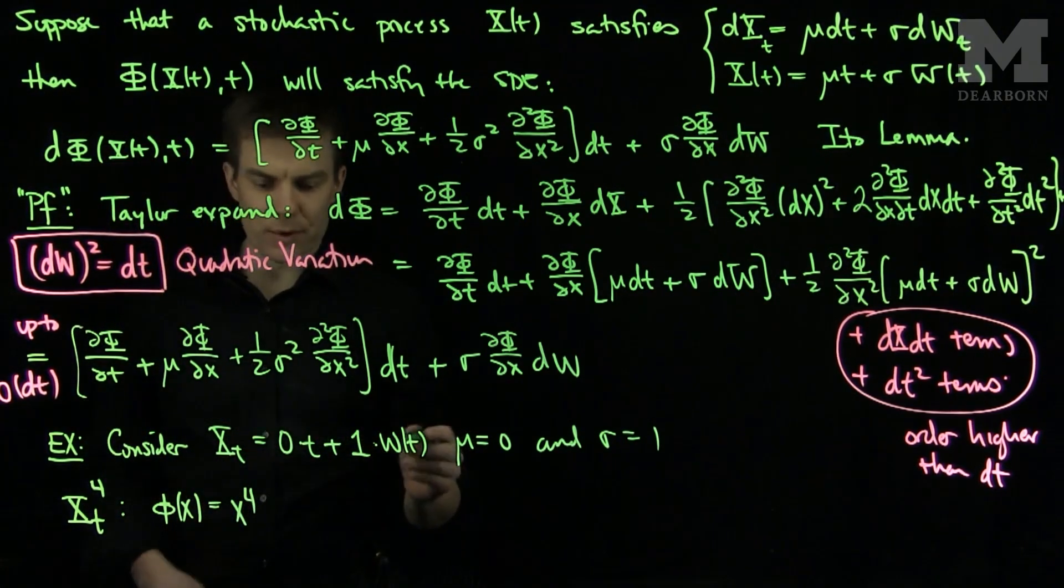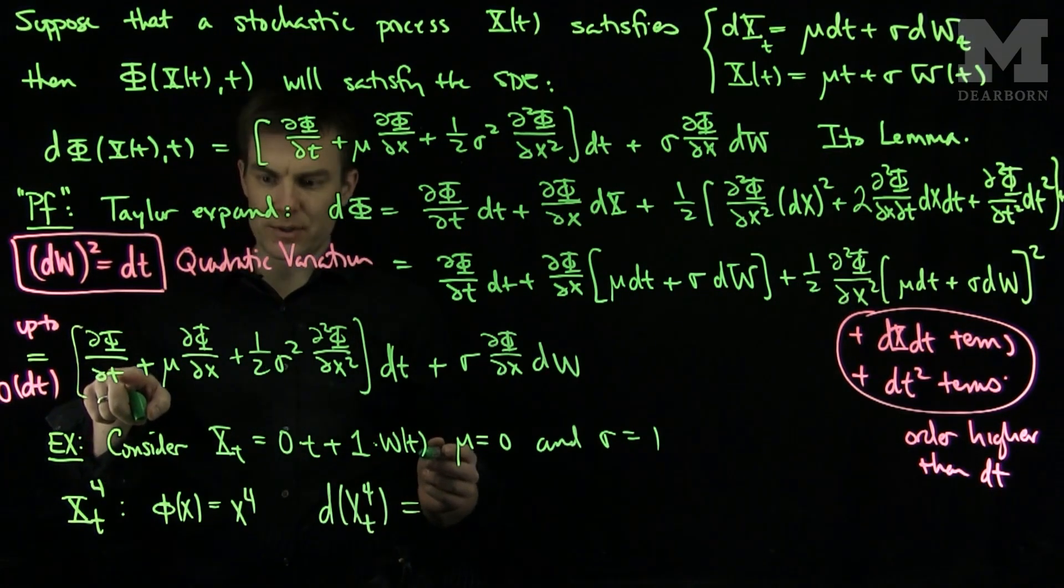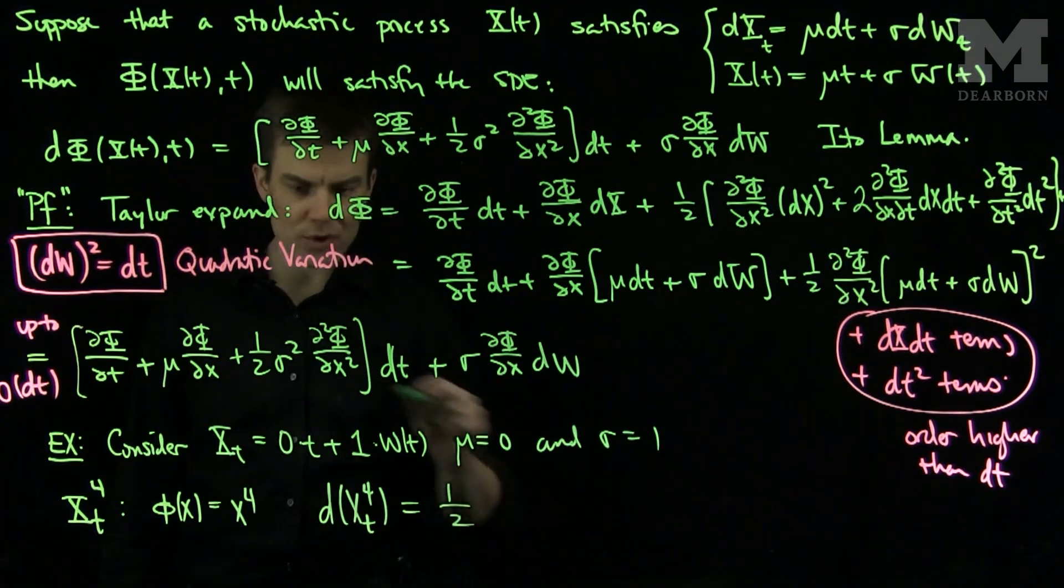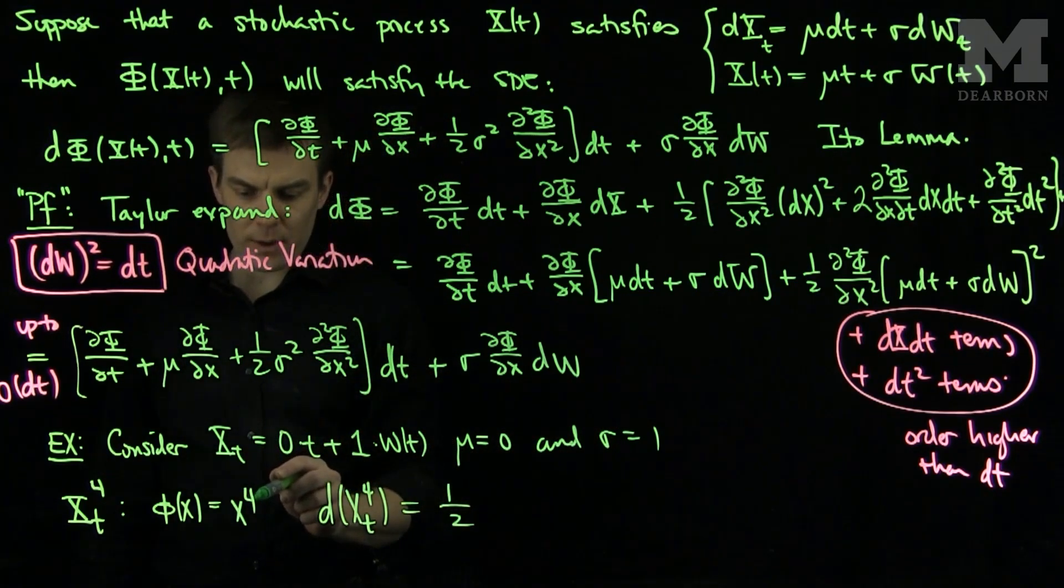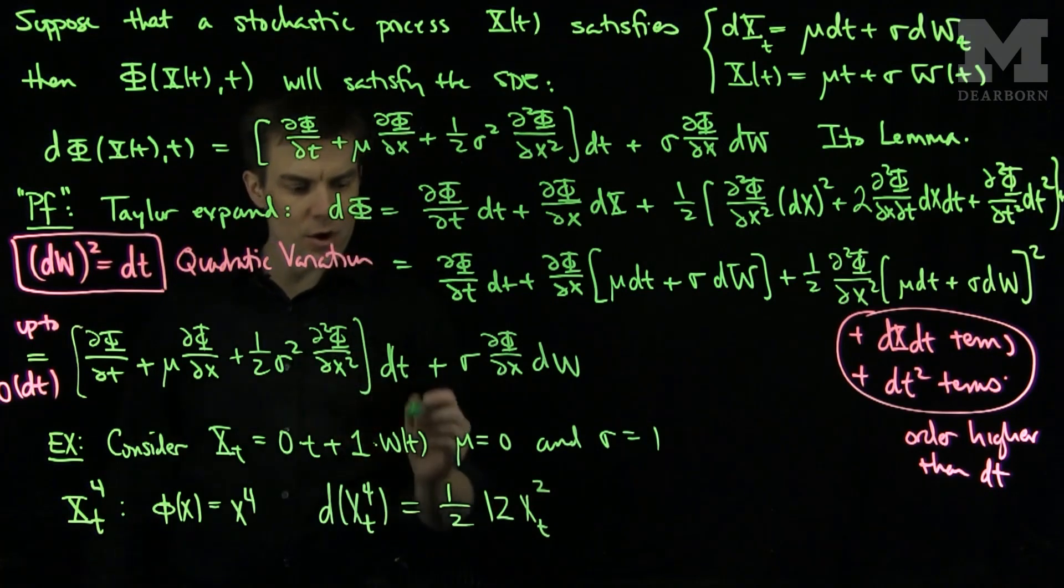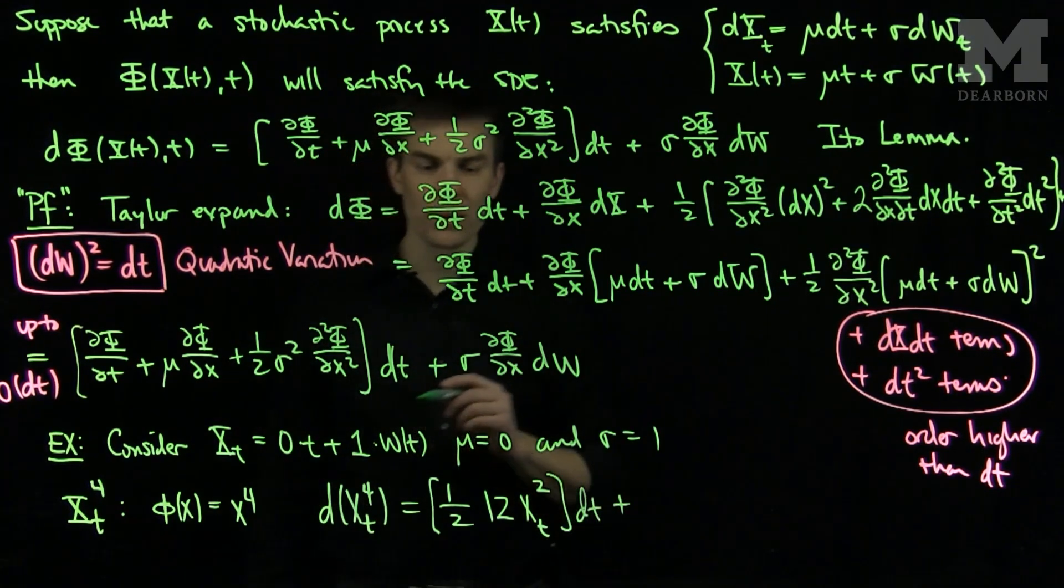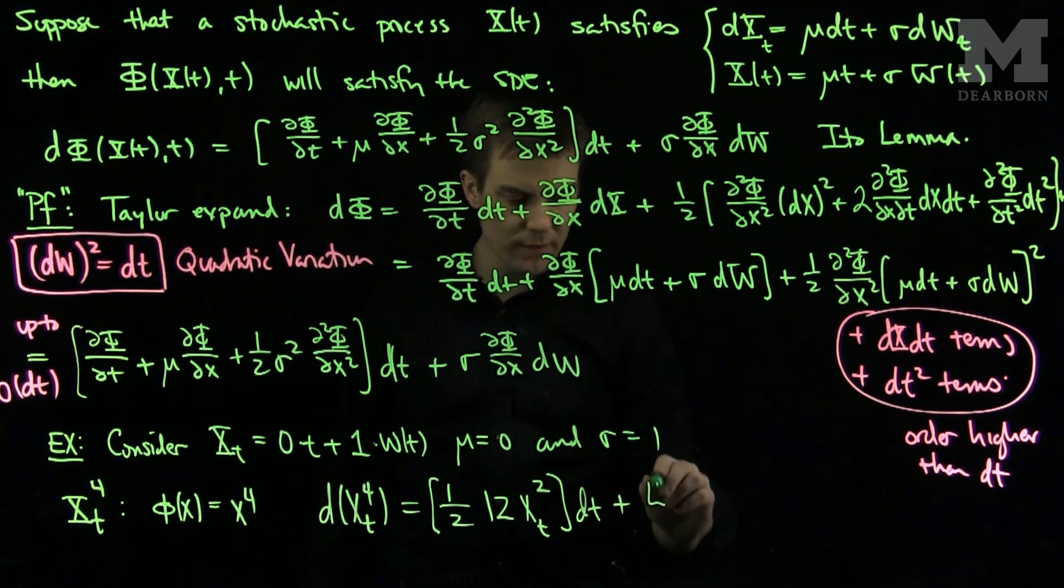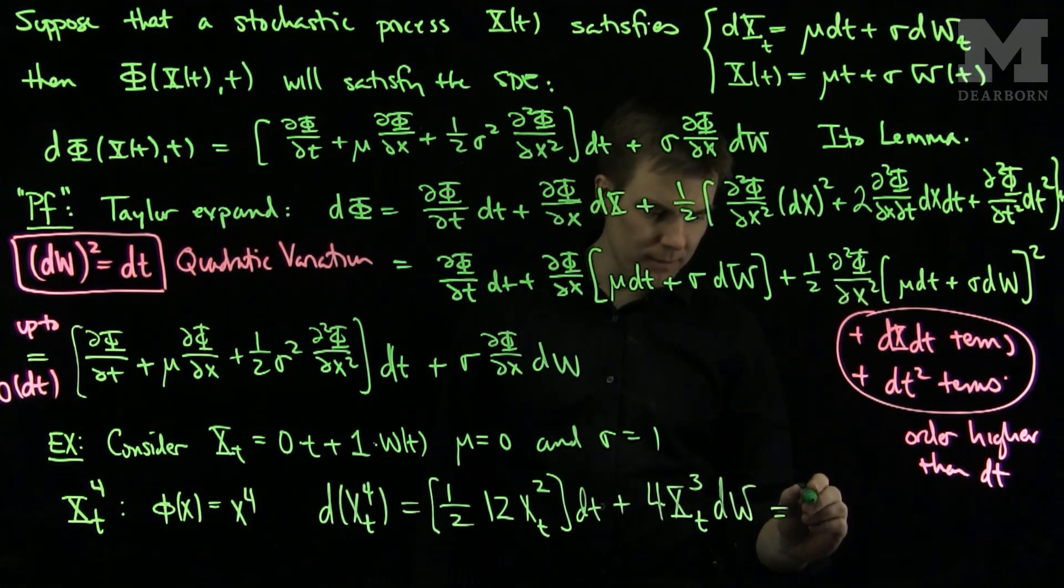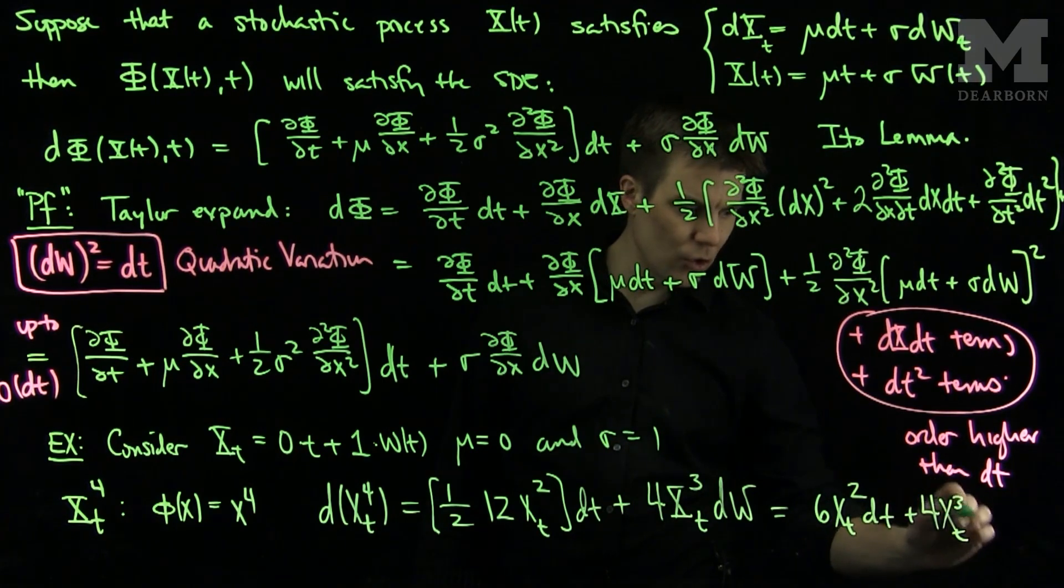So all of our terms, so what SDE will this satisfy? d(x^4(t)) will be equal to, there is no t dependence so that term will be 0. The μ was assumed to be 0. I'll have a (1/2)σ², so this will be (1/2)σ² is going to be 1. And the second derivative of x^4 will be 12x², so I'll have an x(t)² term. There are no other terms over here, so those are my dt terms. Plus, my σ is 1 and my dx/dt is 4x³, so I have a 4x(t)³ in the direction of Brownian motion. So, if we simplify this, we will have 6x(t)² dt + 4x(t)³ dw.